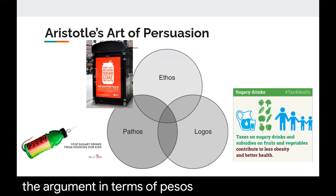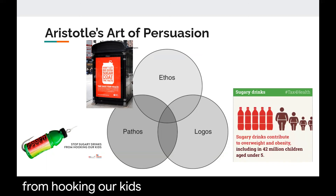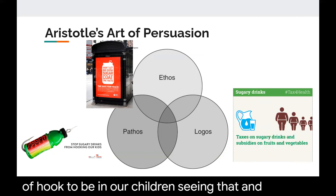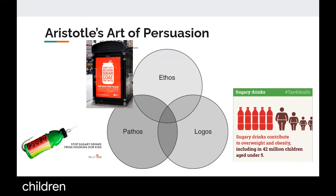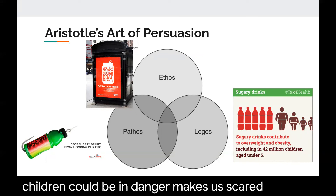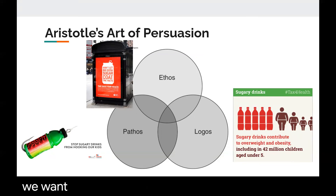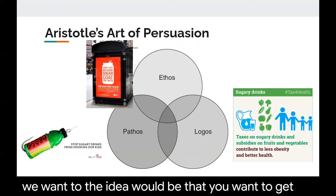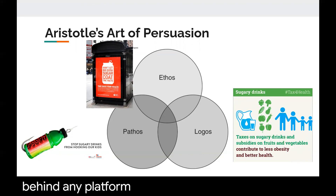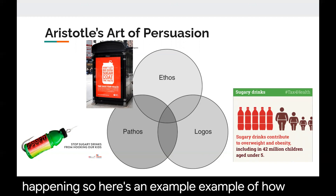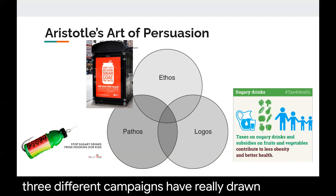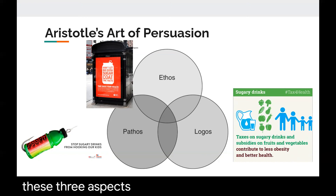In terms of pathos: 'Stop sugary drinks from hooking our kids.' We would never want that kind of hook near our children. Seeing that and thinking about that makes us feel like our children could be in danger — it makes us scared — so we want to get behind any platform that would keep that from happening. Here's an example of how three different campaigns have drawn upon these three aspects of the art of persuasion.